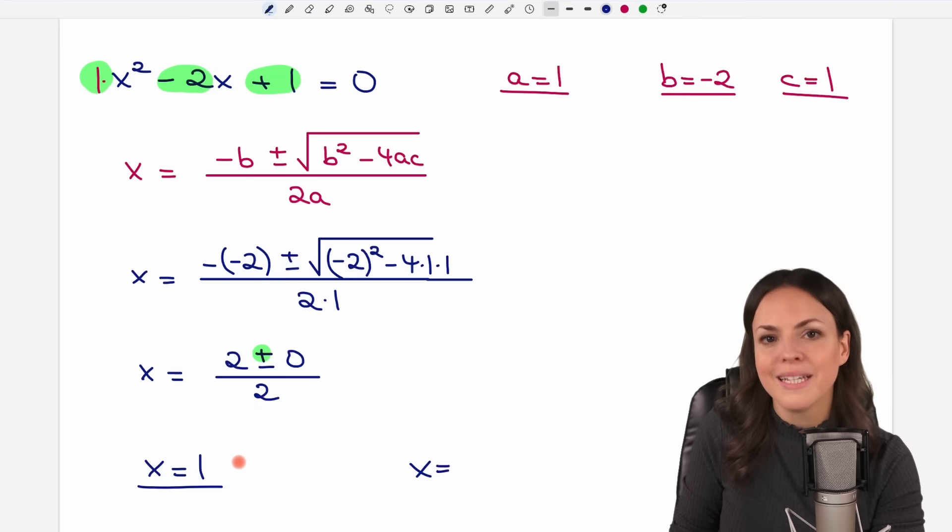If we calculate this we have 2 divided by 2 equals 1. Our first solution. And the second solution is with a minus here. It's not so different this time because of the 0.